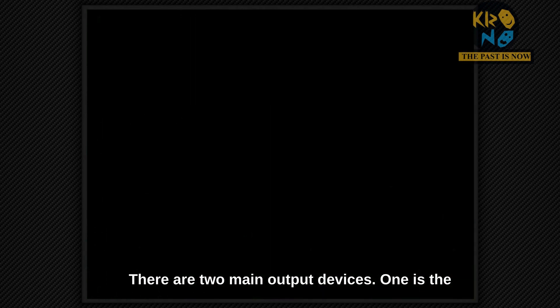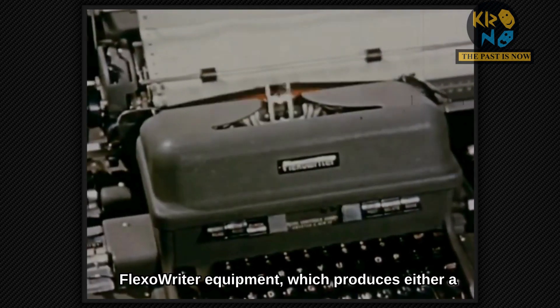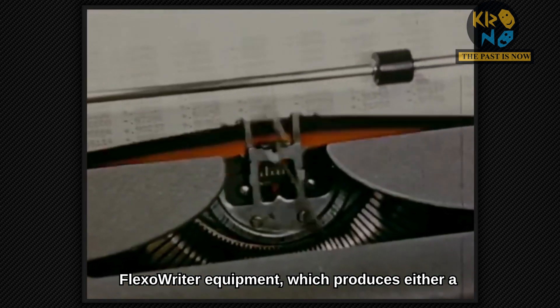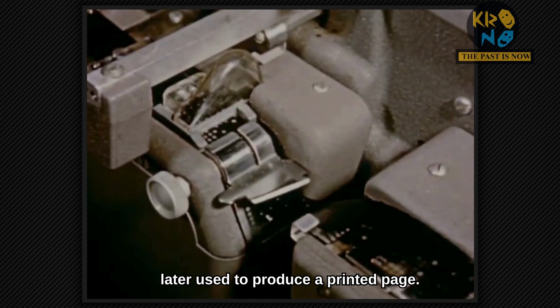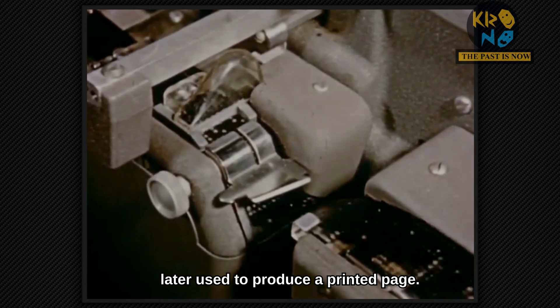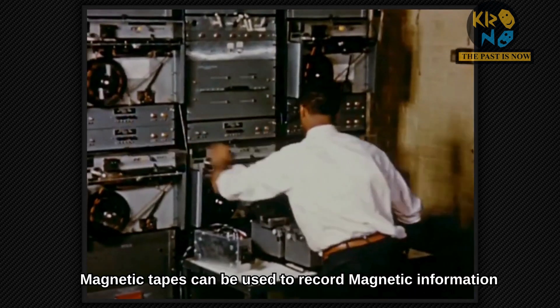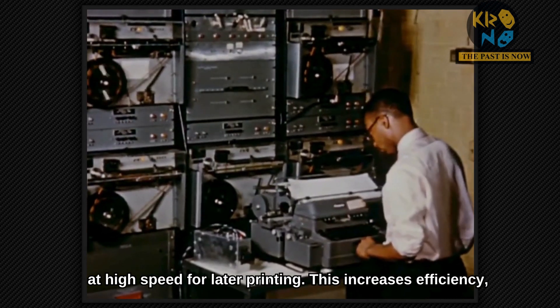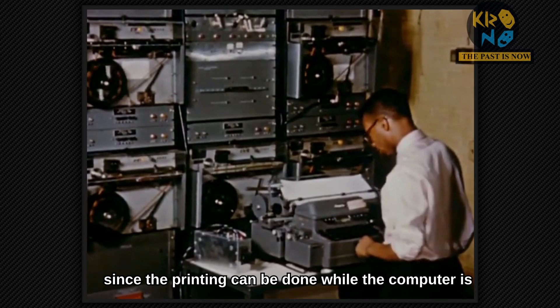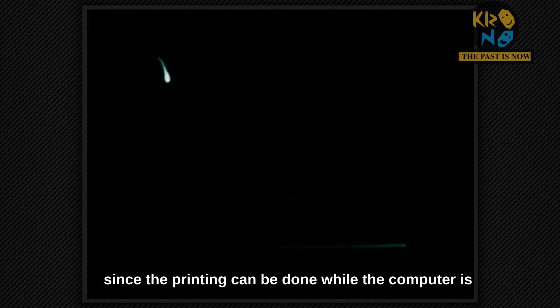There are two main output devices. One is the FlexoWriter equipment, which produces either a typewritten page or a print paper tape, which may be later used to produce a printed page. Magnetic tapes can be used to record information at high speed for later printing. This increases efficiency since the printing can be done while the computer is engaged on another problem.